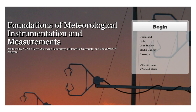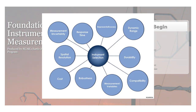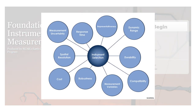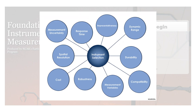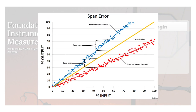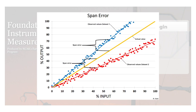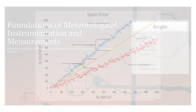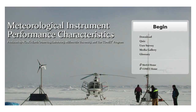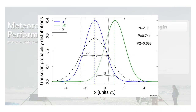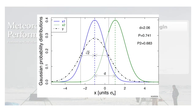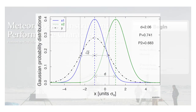The course begins with an introductory lesson, Foundations of Meteorological Instrumentation and Measurement, which sets the basis for learning about instrumentation and observing systems, including key performance characteristics and types of measurement errors. The next lesson, Meteorological Instrument Performance Characteristics, goes into these variables in much greater detail and includes the mathematical underpinnings of these quantities.